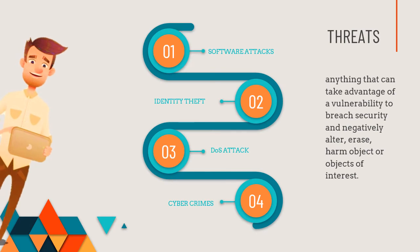Anything that can take advantage of a vulnerability to breach security and negatively alter, erase, or harm objects of interest — that is what a threat is. If a particular person tries to access your network without authentication by using a vulnerability or a security breach, and then negatively accesses your data, steals credit card or debit card information, erases data, or destroys software or hardware components of a computer system — all of these come under the category of threats to a network.